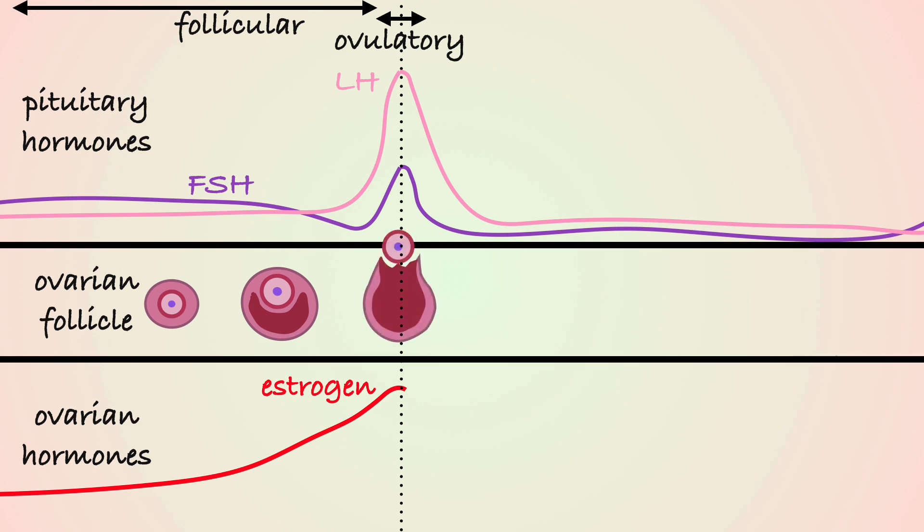Ovulation tests detect LH hormone in urine, so a positive test means that LH levels are high and ovulation should occur within the next 24 to 36 hours.